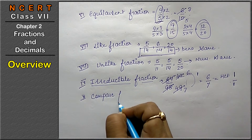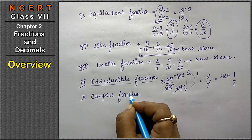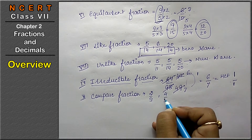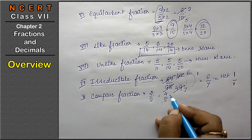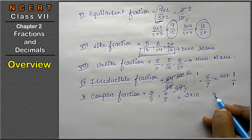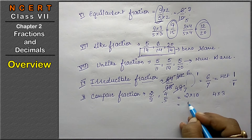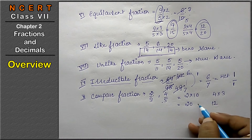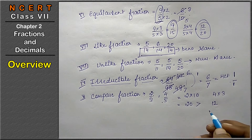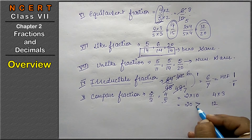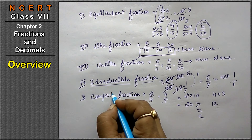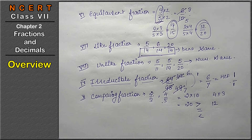The last fraction type is comparing fractions. In comparing fractions, we compare two fractions — like 2 upon 3 and 4 upon 5. To find which is bigger, we cross multiply: 2 × 5 = 10 and 4 × 3 = 12. Twelve is bigger, so 4 upon 5 is greater. The result can be bigger, equal, or less. This is called comparing fractions.